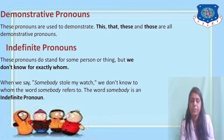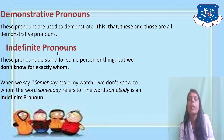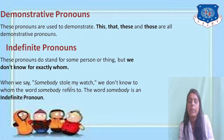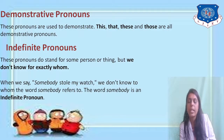Demonstrative pronouns are used to demonstrate things — this, that, these, those are all demonstrative pronouns. Indefinite pronouns stand for some person or thing but we don't know exactly who. For example, 'someone' and 'everybody' are indefinite pronouns because we are addressing people in general without specifying who. So we have talked about different kinds of pronouns and nouns used in sentences.